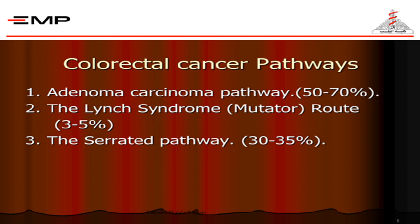Before studying the polyps, we need to know the colorectal cancer pathways. Most adenocarcinomas of the colon and rectum arise on top of neoplastic polyps or adenomas — this is the adenoma-carcinoma pathway. The Lynch syndrome, a non-polyposis pathway, involves cancer developing on flat mucosa and accounts for 3 to 5 percent. Recently, the serrated pathway, responsible for about a third of colorectal carcinoma cases, has been identified — these are polyps with histopathological criteria of a serrated surface.